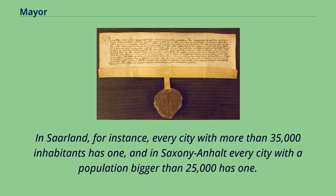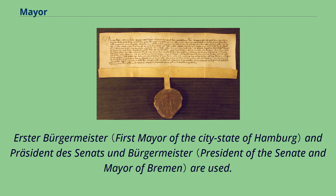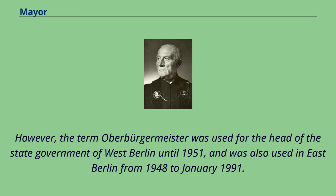In Saarland, for instance, every city with more than 35,000 inhabitants has one, and in Saxony-Anhalt every city with a population bigger than 25,000 has one. The term Oberbürgermeister is not used in the three city-states, where the mayors are simultaneously head of state governments, but Regierender Bürgermeister, Erster Bürgermeister, and Präsident des Senats und Bürgermeister are used. However, the term Oberbürgermeister was used for the head of the state government of West Berlin until 1951, and was also used in East Berlin from 1948 to January 1991.